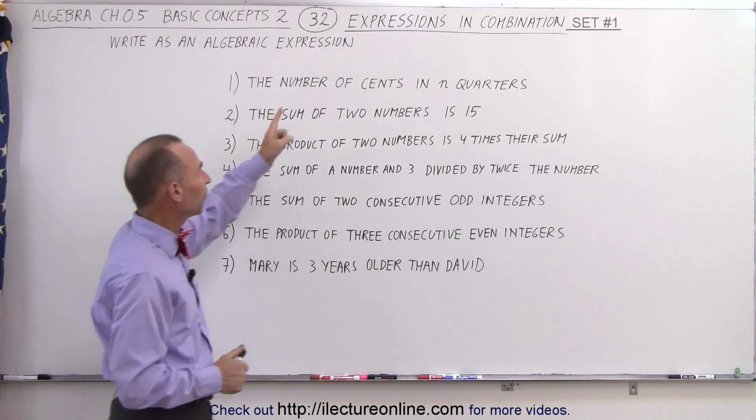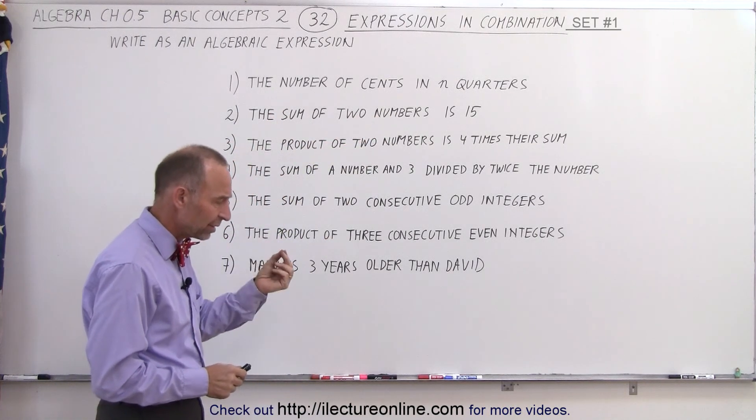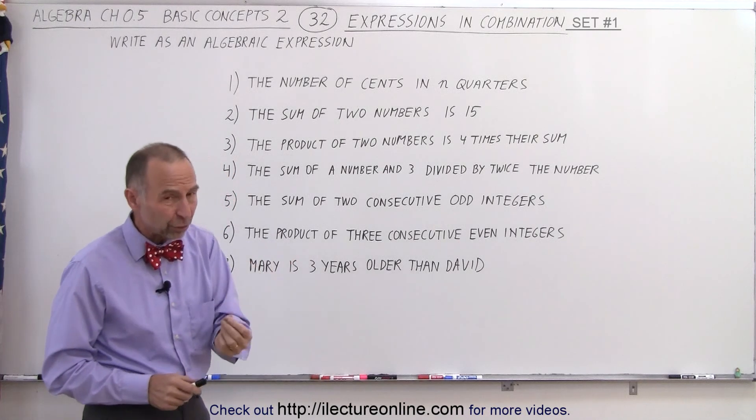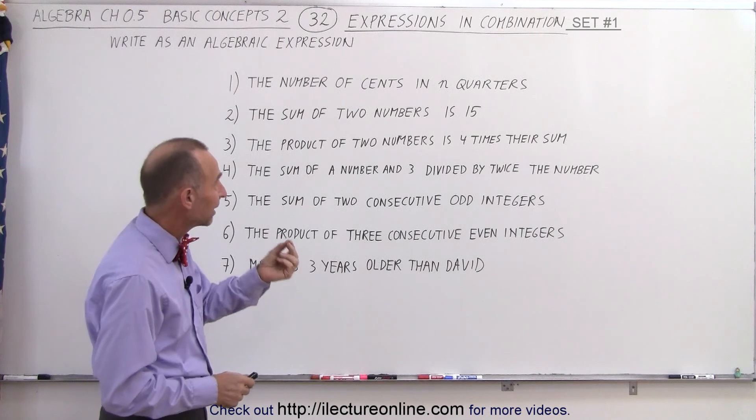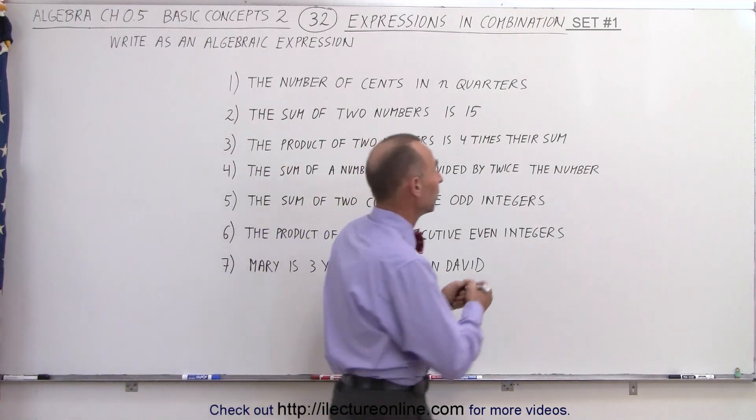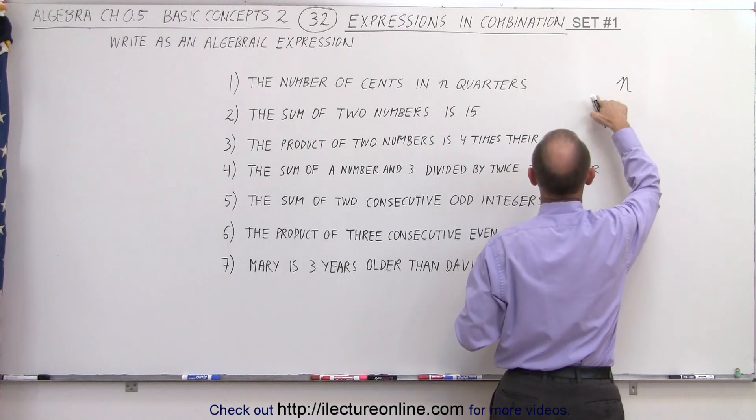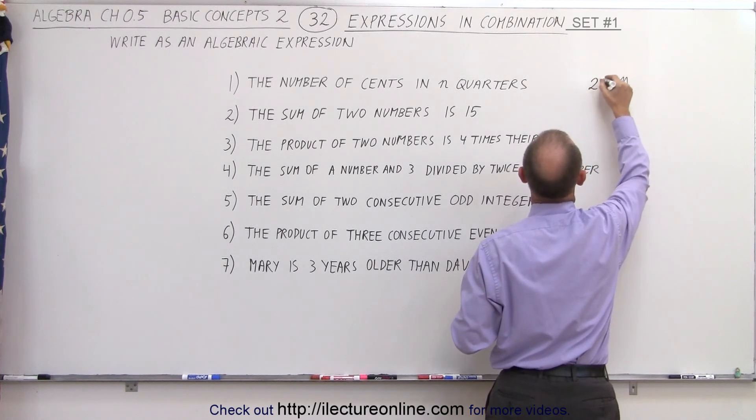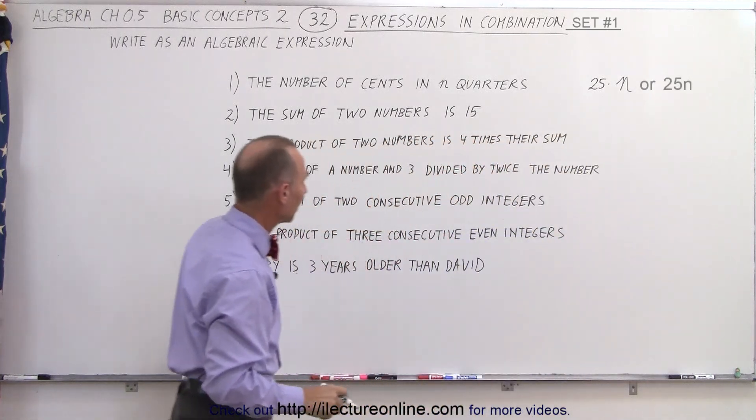The number of cents in n quarters. We know that there's 25 cents for a single quarter, but we have n quarters. So if we multiply 25 times n, that gives us the number of cents in quarters. n is the number of quarters that we have, and for each quarter we have 25 cents. So we multiply 25 times the number of quarters. That gives us the number of cents.